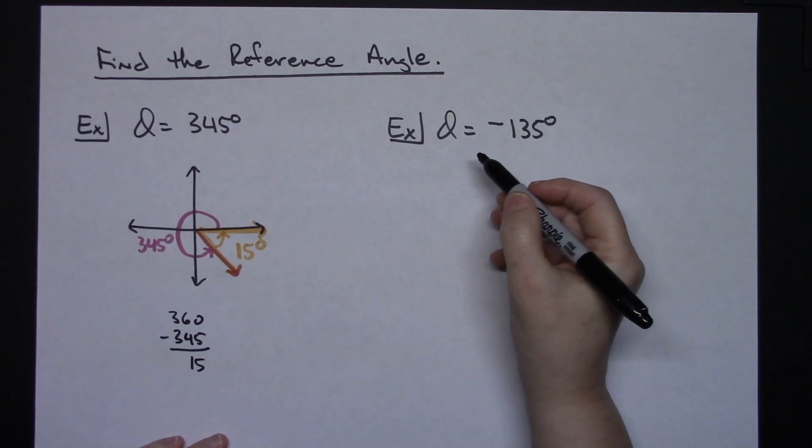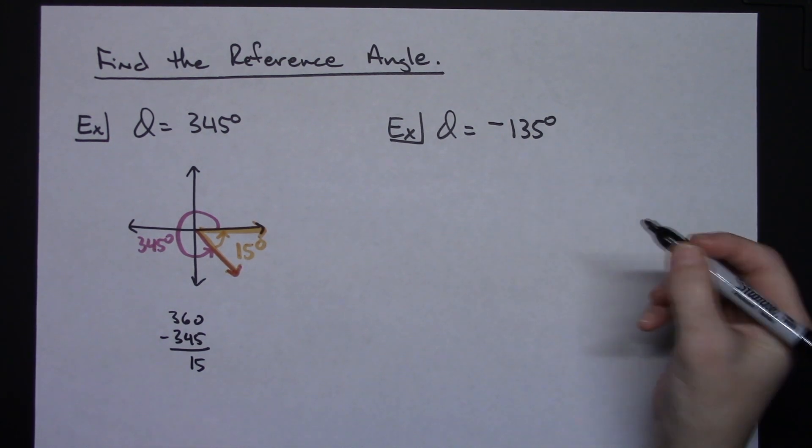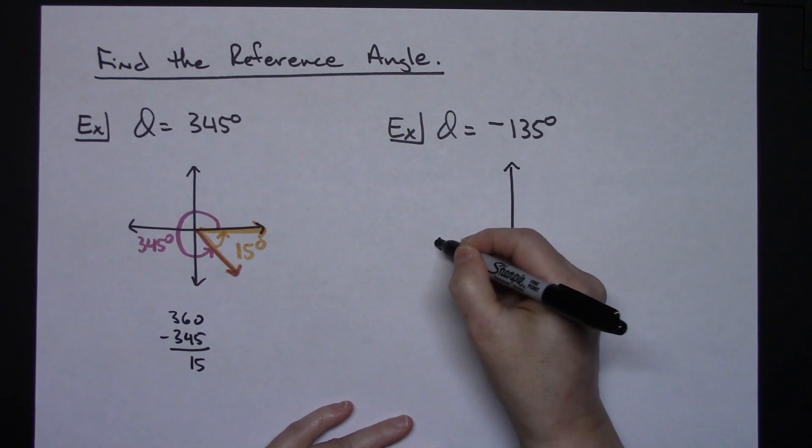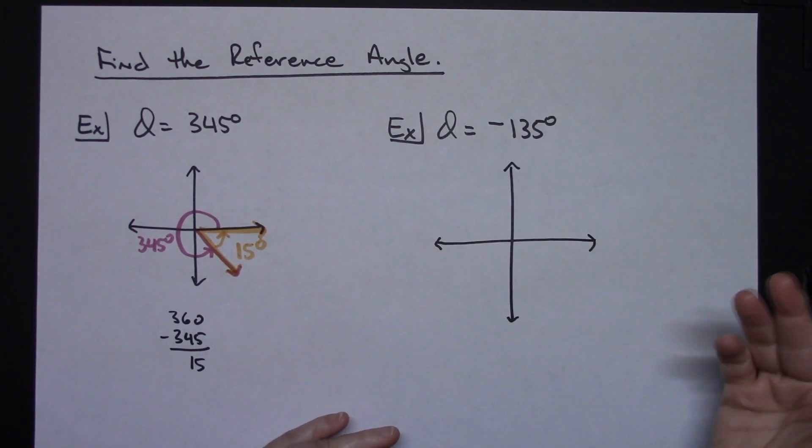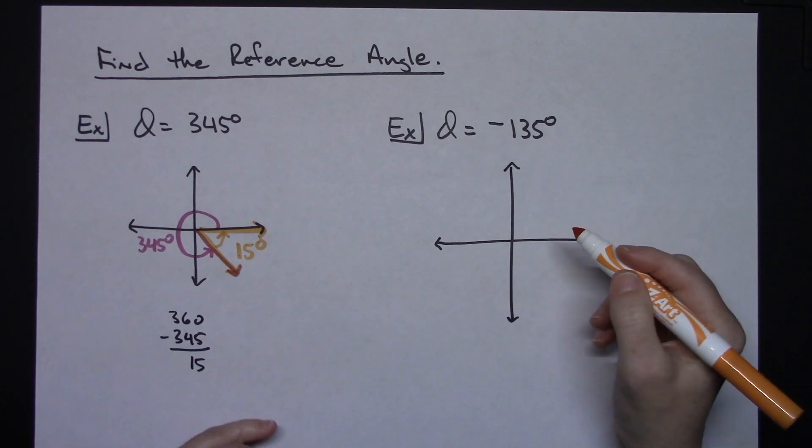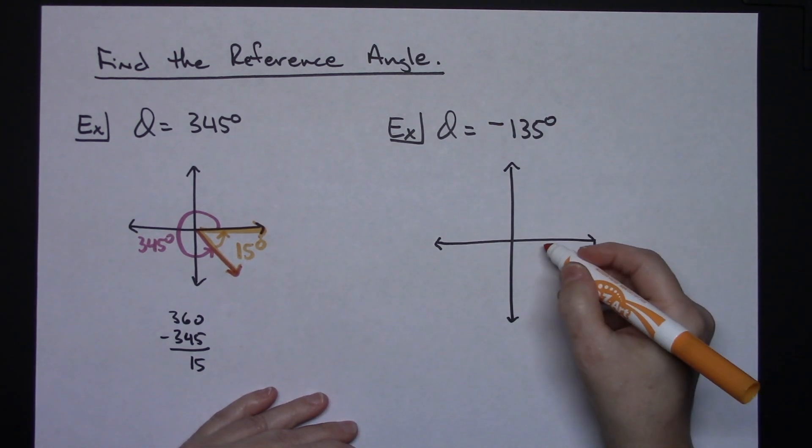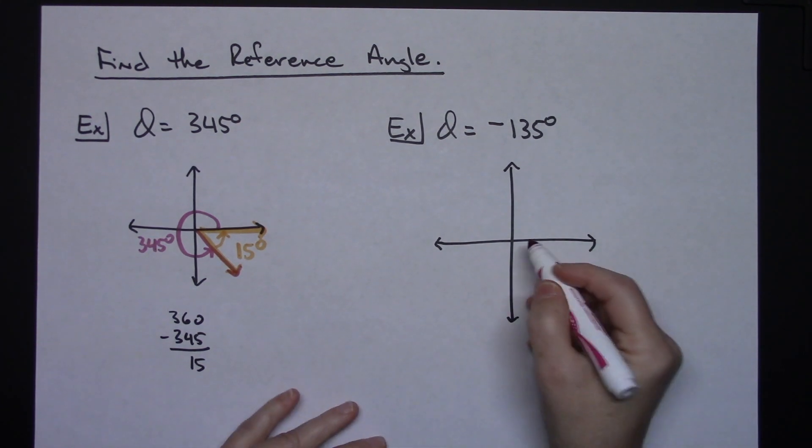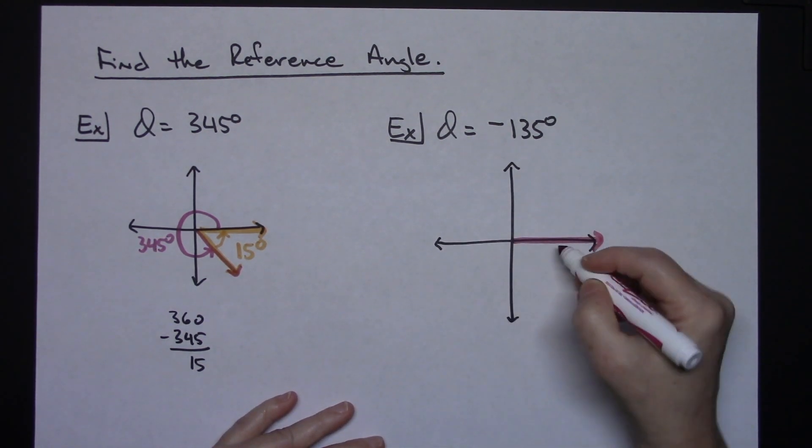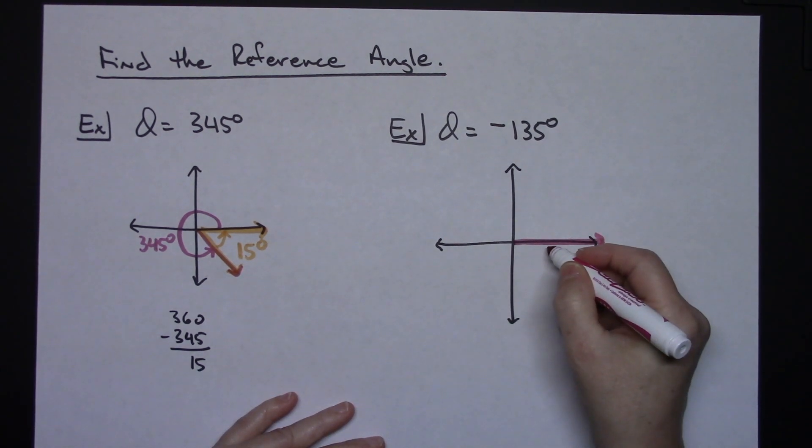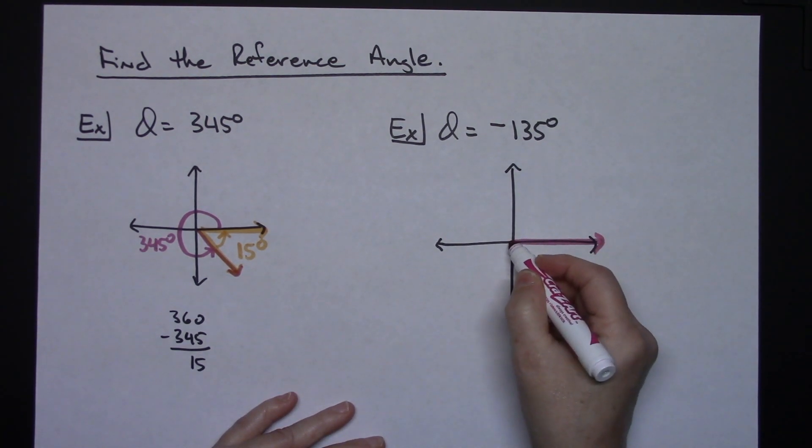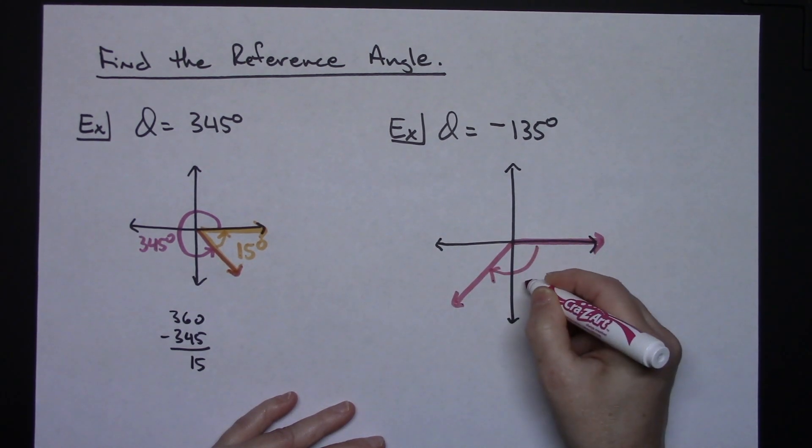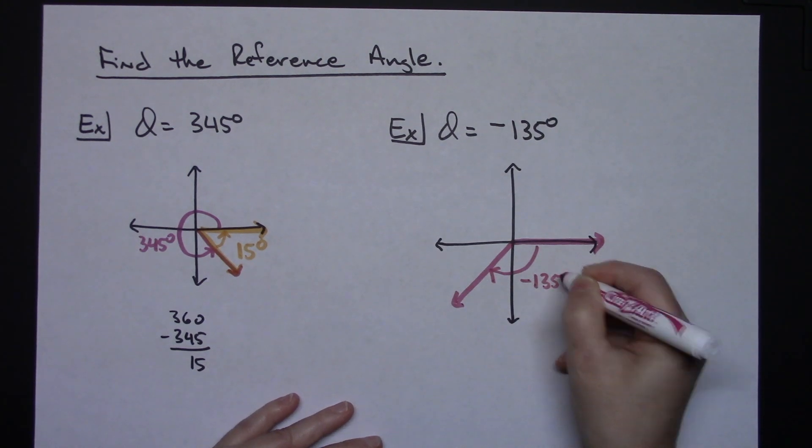In the second example we've got a theta that is negative 135 degrees. And if you're working in trig you realize that that is telling you the orientation or rotation of the angle is different. So a negative 135 degrees means I would start here and instead of going counterclockwise I would go clockwise around and 135 degrees is going to end up right here. So there is the negative 135 degrees.